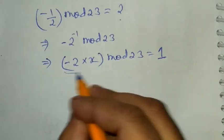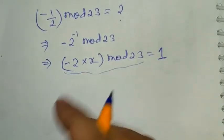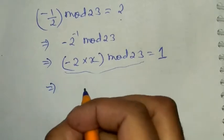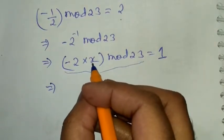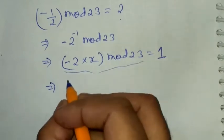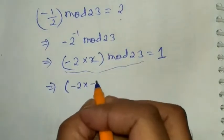For what value of x will this term become 1? Let's put x is minus 12. Minus 2 into minus 12.